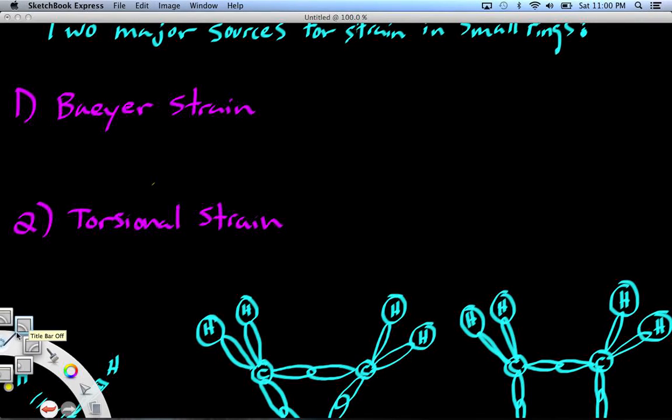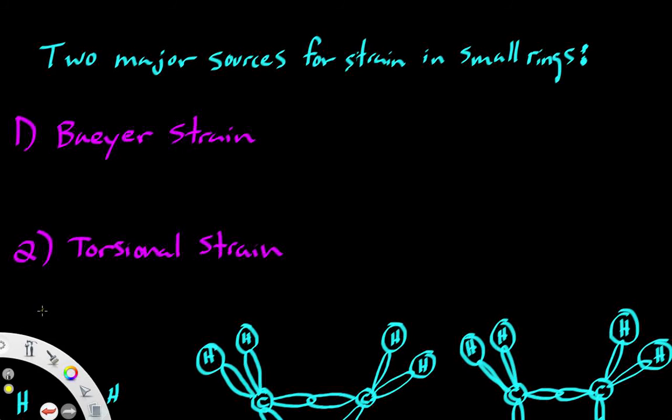In this video we will talk about energetics and stabilization of small rings. There are two major sources of strain in small rings, one of them being Baeyer strain.